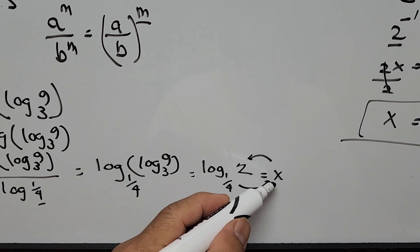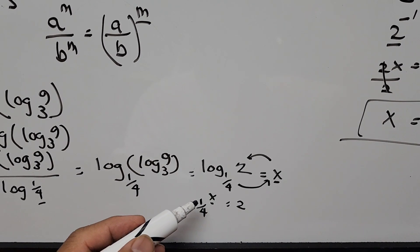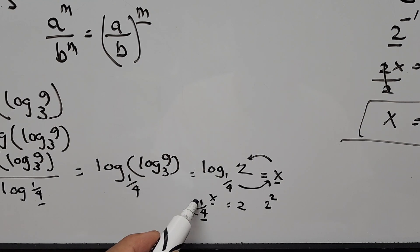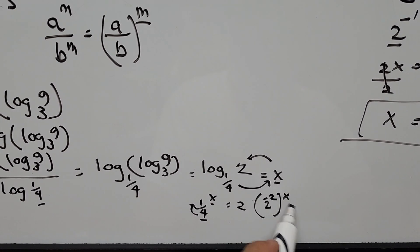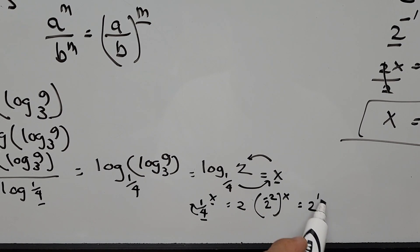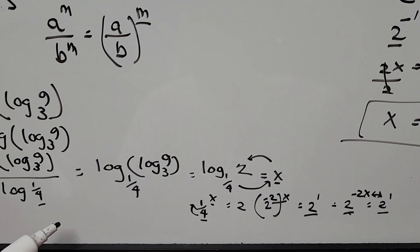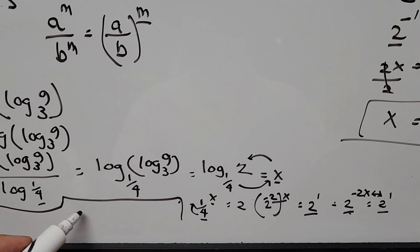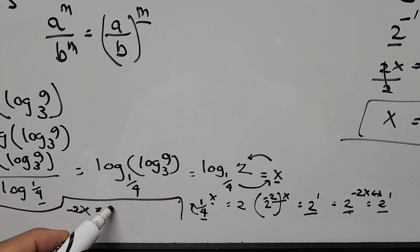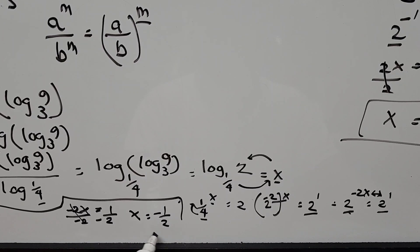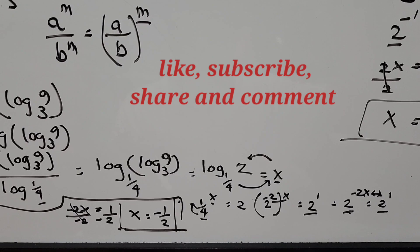Writing 1 fourth as 2 squared in the denominator gives 2 to the negative 2, so (2 to the negative 2) to the power of x equals 2 to the power of 1. Multiplying the exponents: 2 to the negative 2x equals 2 to the 1. Same base, so negative 2x equals 1, and x equals negative 1 half. This matches our answer from the first method.